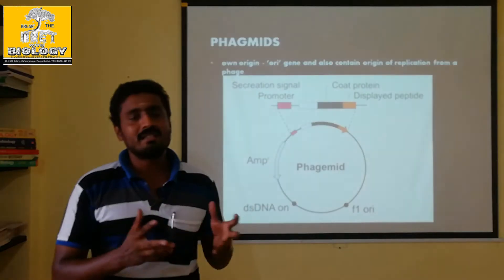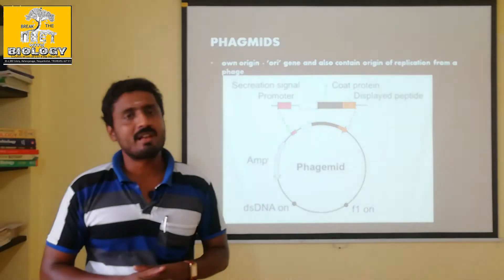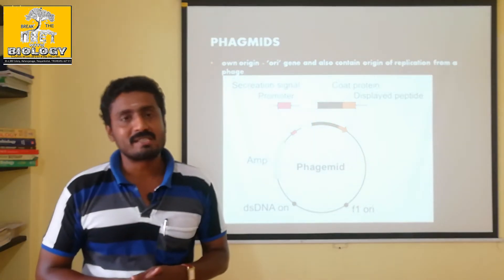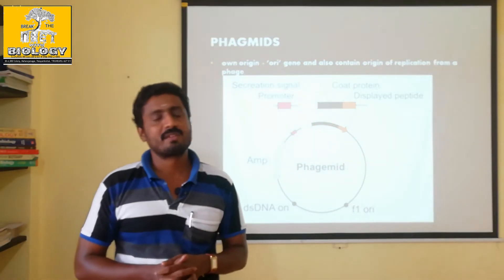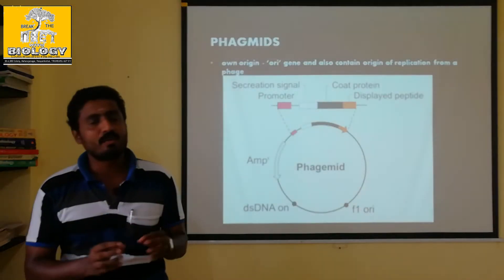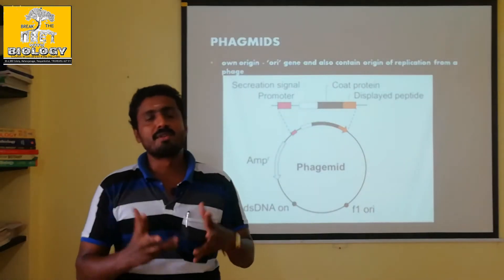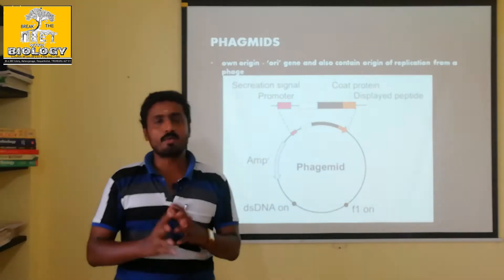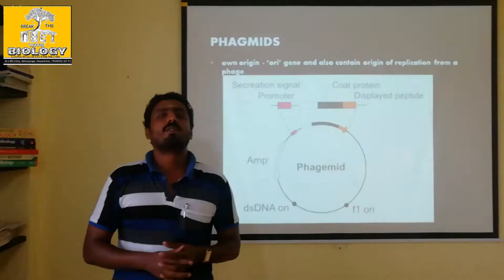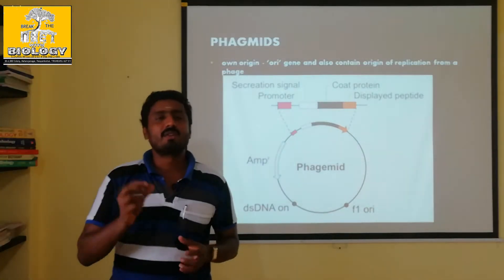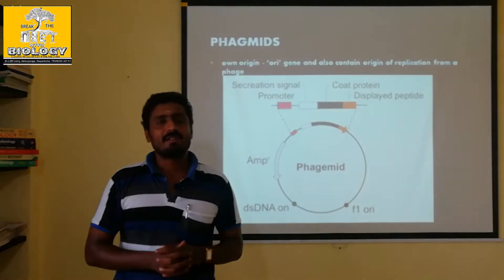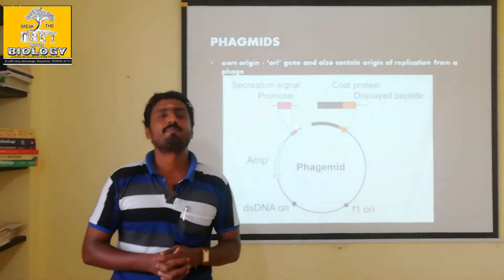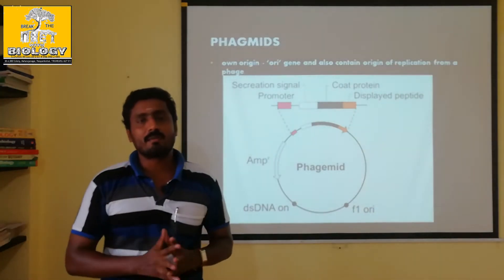Cosmids are one type. One of the types are phage meds. What does phage meds mean? The name is phage meds — it is a combination of bacterial plasmid and a phage. It is DNA, and we are going to live in the DNA. It is phage meds.